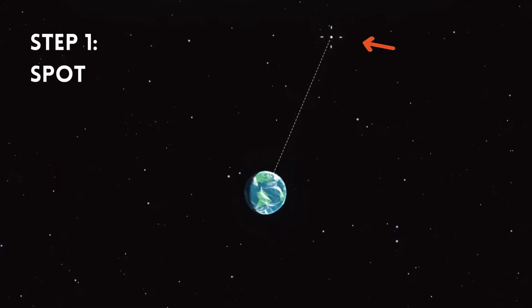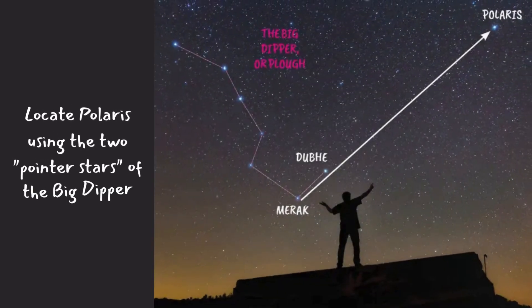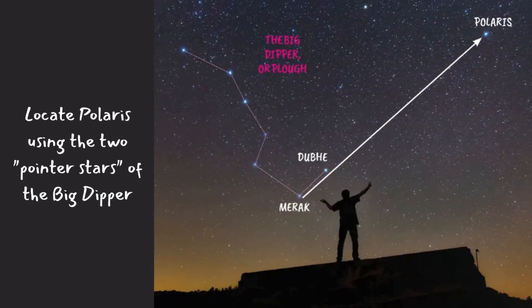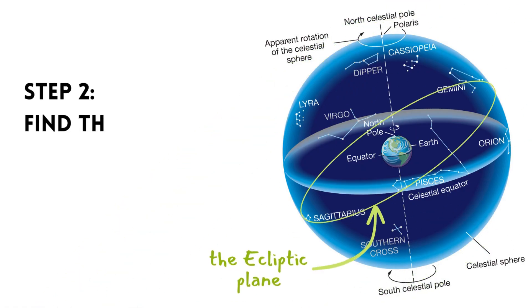Now that we have the basics down, let's learn the steps to identify a constellation. The first step is to locate the North Star or Polaris. It's nearly directly above the North Pole, making it a reliable reference point. Now we look for the ecliptic plane.